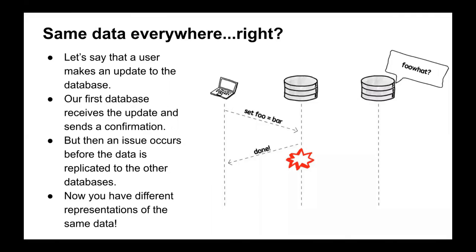But there's another issue with replicated databases in distributed systems: do we have the same data everywhere? That's not always the case. If a user makes an update to the database — say they want a variable foo set to bar — they might send it to one database in our system, it gets that update, stores it, and tells the user it's stored. But then something happens and it doesn't get a chance to tell the other databases this update. Now we have different databases with different information in our system. This is a pretty common issue with distributed systems to be aware of — when you have many databases, you might have a situation where the data is not accurate across all of them.